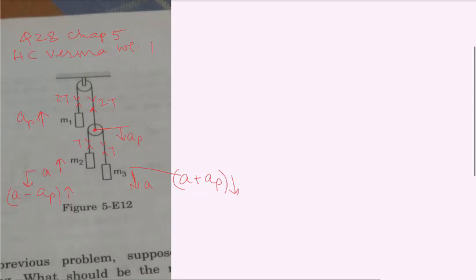Now let's write force equation for m1, the 1 kg block: 2t minus 1g equals 1 times ap.